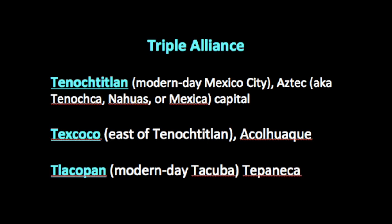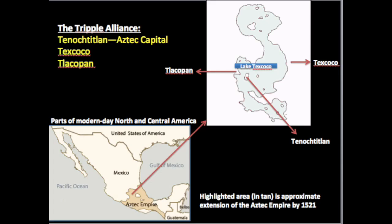Here is a map showing the extension of the Aztec Empire — the highlighted tan area — stretching from Tenochtitlan all the way down to what is now Central America. Some sources say Nahuatl was spoken as far as Nicaragua, showing how extensive their power and culture reached. A closer view shows the lake area: Tenochtitlan built on an island in Lake Texcoco, with Texcoco farther across the lake and Tlacopan on the other side.